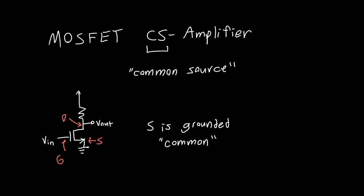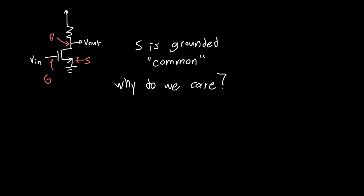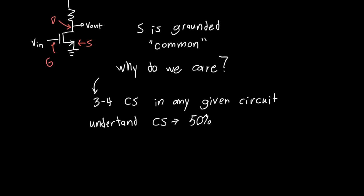It's sort of just something you have to get used to. Now why do we care? This is probably one of the most important circuits in all of MOSFET land. You'll typically have between three and four common source amplifiers in any given circuit — in an op amp, in pretty much any given analog circuit, you're going to have common source amplifiers. So many different things can be analyzed as a common source, so if you understand the common source well, you understand a good 50% of the circuit analysis you'll ever need for MOSFET circuits, which are ubiquitous in integrated circuits.